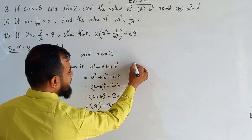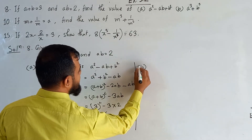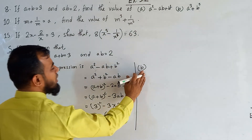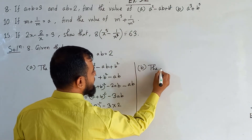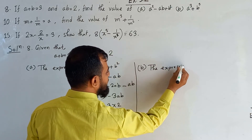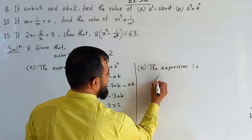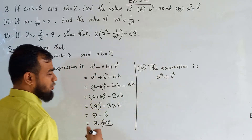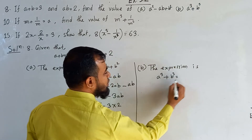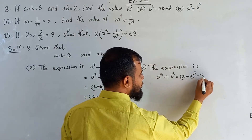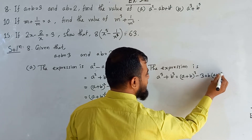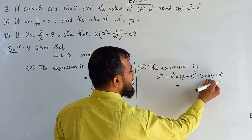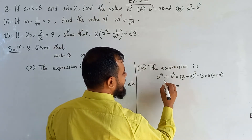Now sub-question number B. Activity B — the given expression is A cubed plus B cubed. We don't know the value of A and B individually. But we know the formula from the corollary of A cubed plus B cubed: that is equal to A plus B whole cubed minus thrice AB into A plus B. This is our first corollary of exercise 3. Now we can put the value of A plus B and AB here to calculate the value of A cubed plus B cubed.